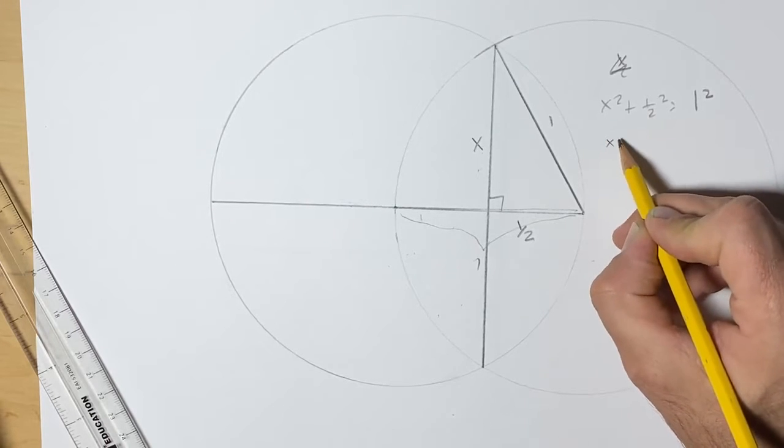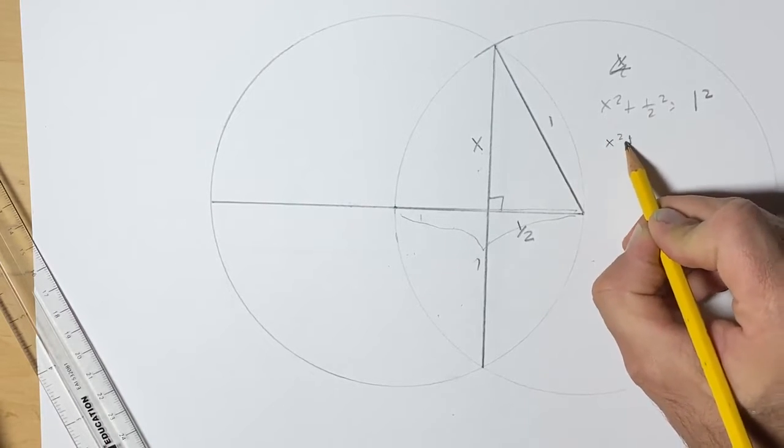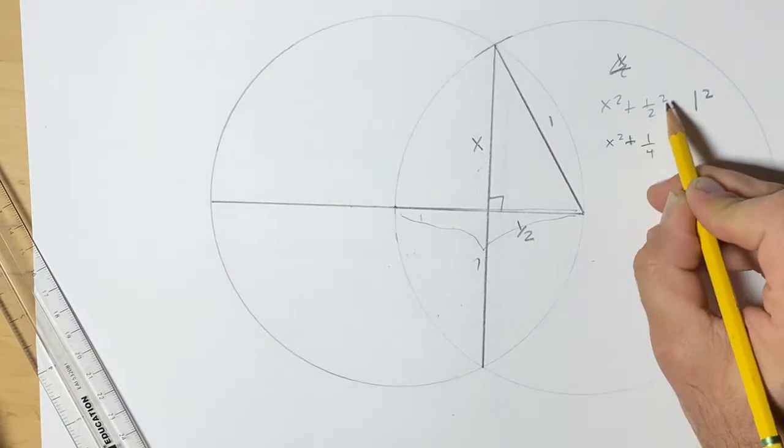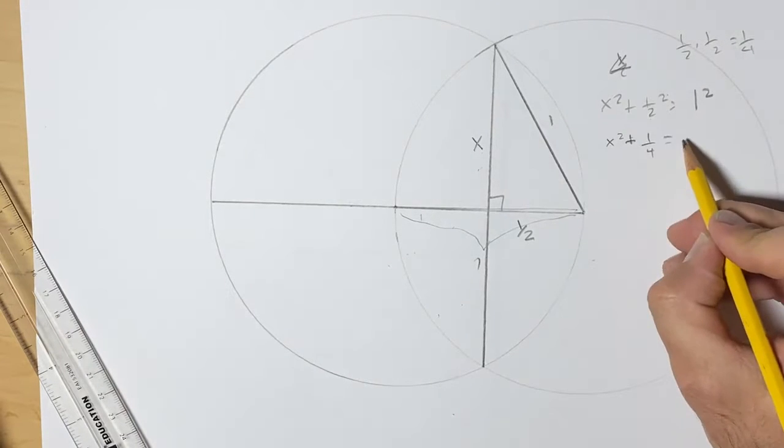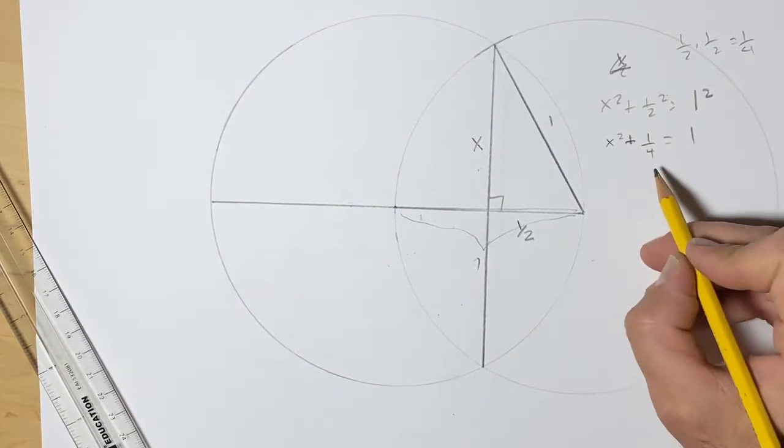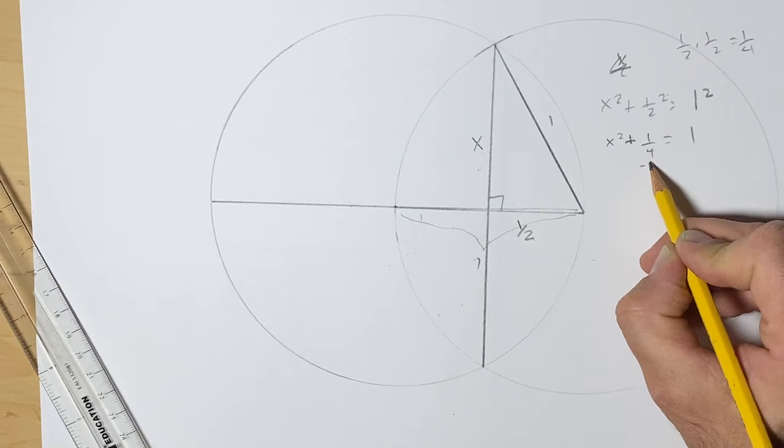We're going to square 1. We get 1 fourth. 1 squared. 1 half squared means 1 half times 1 half, which is 1 fourth, equals 1 times 1, which is 1. I'm going to subtract that on both sides.